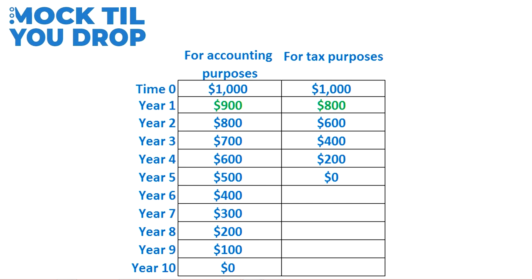Here we have that equipment and the different values based on its depreciation schedule. For tax purposes, that equipment is depreciated at an amount that is double that used for accounting purposes. We have the same equipment starting at a $1,000 value. At the end of year one, it was depreciated by $100 for accounting purposes but $200 for tax purposes — so this is where we get the $900 and $800 amounts from.